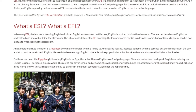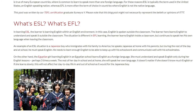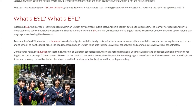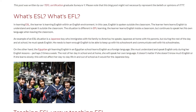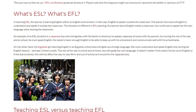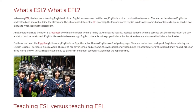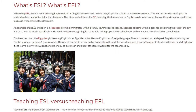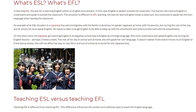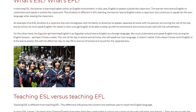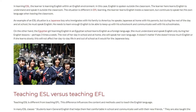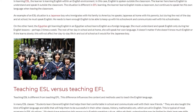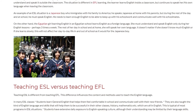On the other hand, the Egyptian girl learning English in an Egyptian school learns English as a foreign language. She must understand and speak English only during her English lessons, perhaps three times a week. The rest of her day in school and at home, she will speak her own language. It doesn't matter if she doesn't know much English or learns slowly — this will not affect her day-to-day life as it would for the Japanese boy.